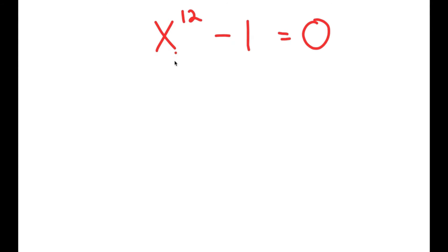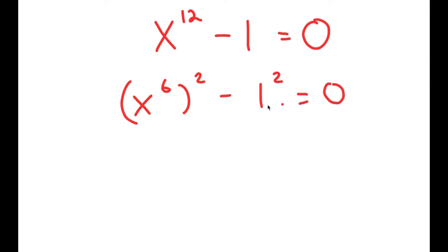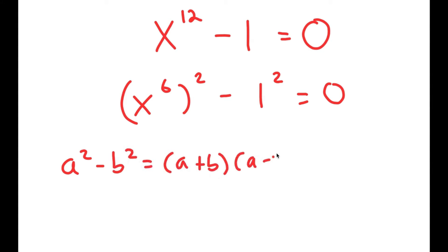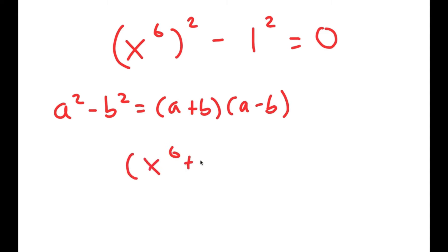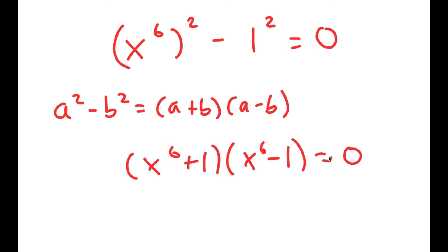To solve this, I'm going to first rewrite this as x to the power of 6, squared, minus 1 squared, is equal to 0. The reason I'm doing this is so I can use the property a squared minus b squared equals a plus b times a minus b. So this turns into x to the power of 6 plus 1 times x to the power of 6 minus 1, equals 0.